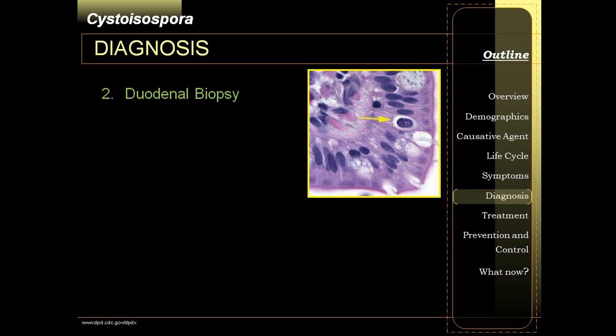Since it produces eosinophilia, you can conclude that Cystoisospora is very much invasive in nature and tends to linger inside the epithelial cells. Therefore, duodenal biopsies can also help diagnose it — biopsy of the duodenal intestinal mucosa — and you can see the cysts there inside.